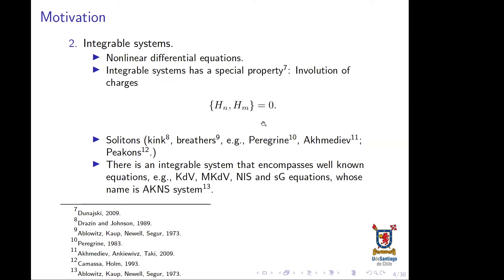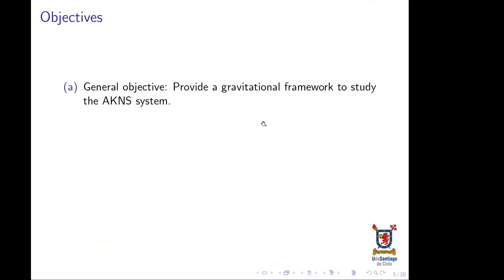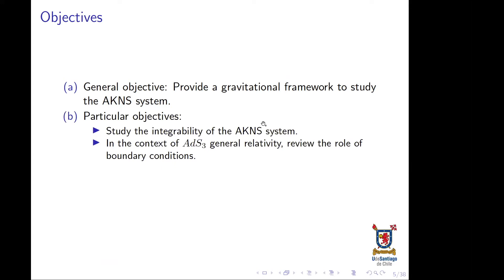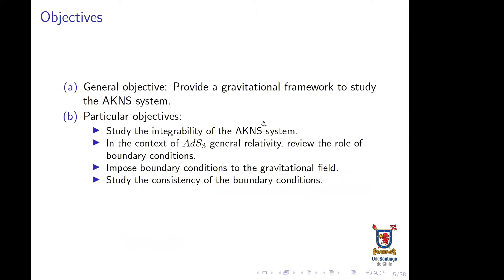The AKNS system is a broad family of integrable systems that encompasses in one single formalism several well-known equations: the KdV equation, modified KdV, the nonlinear Schrödinger equation, and others. With this in mind, the general objective is to provide a gravitational framework to study the AKNS system — specifically, to study its integrability in the context of AdS3 general relativity, impose boundary conditions to the gravitational field, study their consistency, recover an associated metric from the boundary dynamics, and connect it to gravitational physical configurations such as black holes.